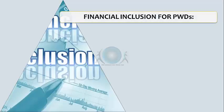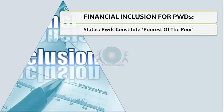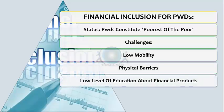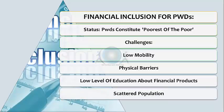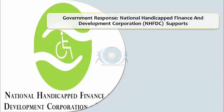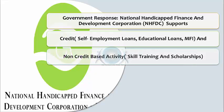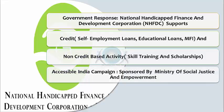Regarding financial benefits for PWDs, there are financial inclusion schemes because PWDs constitute the poorest of the poor. The challenges they face include low mobility, physical barriers, and a low level of education about financial products. The government's response has been to set up the National Handicapped Finance and Development Corporation, which supports both credit-based activities such as self-employment loans and educational loans, and non-credit-based activities like skill training and scholarships.